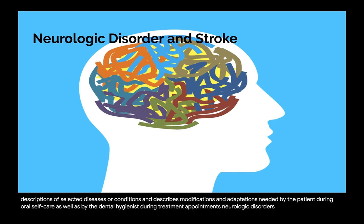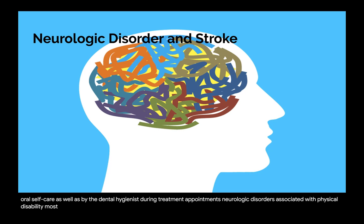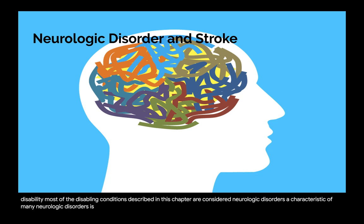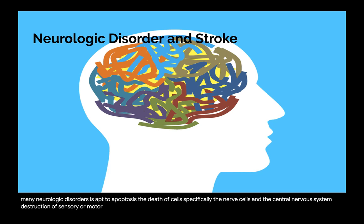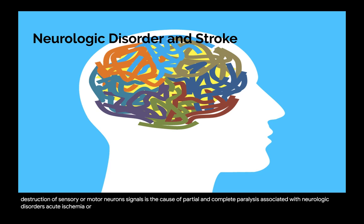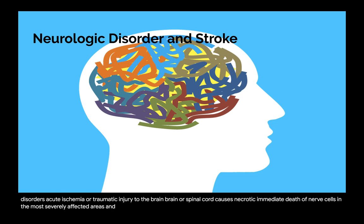Most of the disabling conditions described in this chapter are considered neurologic disorders. A characteristic of many neurologic disorders is apoptosis, the death of cells, specifically the nerve cells in the central nervous system. Disruption of sensory or motor neuron signals is the cause of partial and complete paralysis associated with neurologic disorders. Acute ischemia or traumatic injury to the brain or spinal cord causes necrotic, immediate death of nerve cells in the most severely affected areas and immediate, complete destruction of transmission of neurological signals.